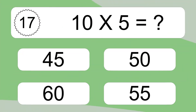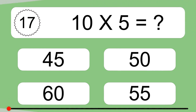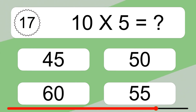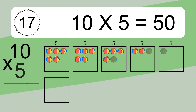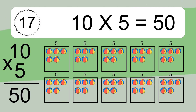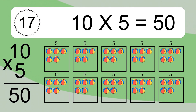10 times 5 equals what? 10 times 5 equals 50. We have 10 boxes, and each box has 5 colorful balls inside. If you count all the balls in all the boxes together, you will have 10 times 5 balls. This equals 50 balls.